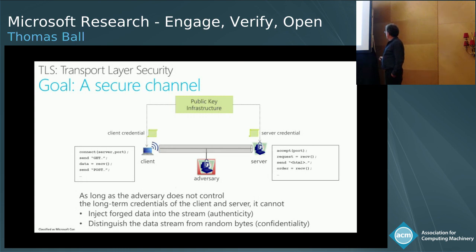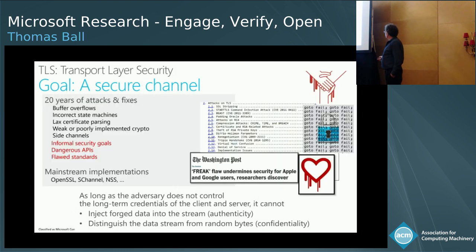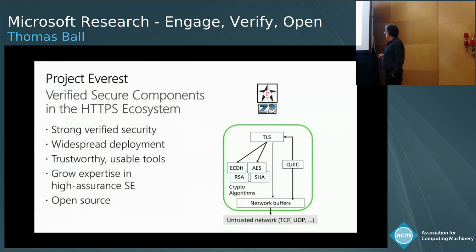What properties do we want out of TLS? It's a secure channel — we have public key infrastructure, and an adversary sniffing on our traffic should not be able to inject data into the stream or read our data out of it. The reality is there are 20 years of attacks and fixes on TLS — ranging from low-level buffer overflows, to lax certificate parsing, to side channels — many, many fixes and patches. The idea of Everest is to build, from a clean slate, a verified HTTPS implementation — really TLS down to the level of network buffers before you get to the untrusted network of TCP and UDP.